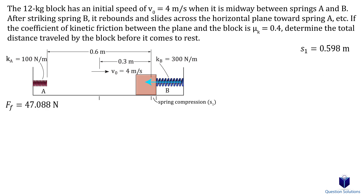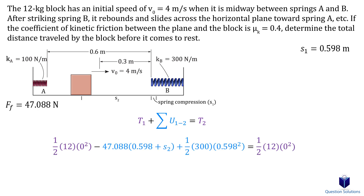Now the spring pushes the block back in the opposite direction, so we write another work and energy equation. This time the spring does positive work while friction still does negative work. Both the initial and final velocities are zero. The spring does positive work over a distance of 0.598 meters — the same as the compression distance. For the frictional force, in addition to the compressed distance the block travels, it will go s meters until it stops, where s is the distance traveled before stopping. The final kinetic energy is zero since the block comes to rest.